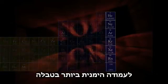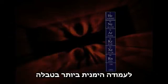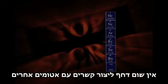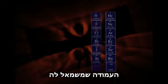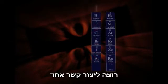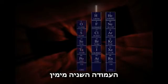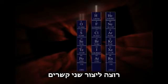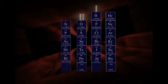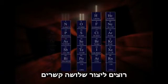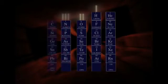The rightmost column in the table has no great urge to make bonds with other atoms. The column to its left wants to make one bond. The second column from the right wants to make two bonds. Third column atoms want to make three bonds, and so on.